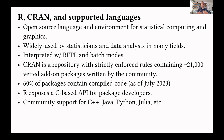CRAN is the crates.io equivalent — it's the official repository — but it differs from repositories in other languages like crates.io in Rust in that it has strictly enforced rules that are also enforced by humans. You have to make sure you pass their strict rules to be published on the repository. As of now, there are about 22,000 packages on CRAN, and if a package doesn't meet the rules, they'll go ahead and pull it as those rules change over time.